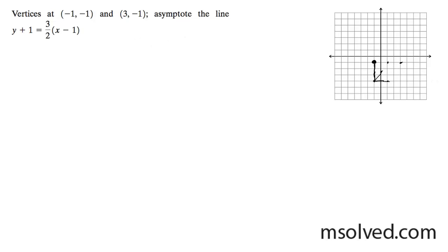So one of my vertices, negative 1, negative 1 right here, and then the other one's located at 3, negative 1, and then the center's located at 1, negative 1.